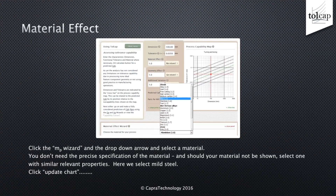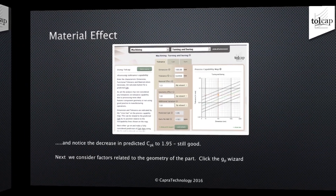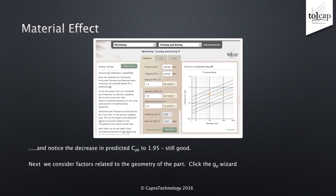For turning and boring, there is an MP wizard button. Click on this and use the drop-down arrow to select a material — in this case, mild steel. Note that you don't need the precise specification of the material; should your material not be shown, you can select one with similar relevant properties. Click 'Update Chart' and notice the decrease in predicted CPK to 1.95, which is still quite acceptable.